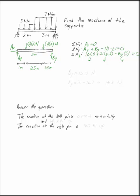I can solve these, solve the sum of the moments to get By is 16.7 newtons. Ay, plug that back in, is 31 minus 16.7 or 14.3. And then you can answer the question: the reaction of the left hand pin is zero newtons horizontally and 14.3 newtons up. The reaction of the right hand pin is 16.7 newtons, also up.